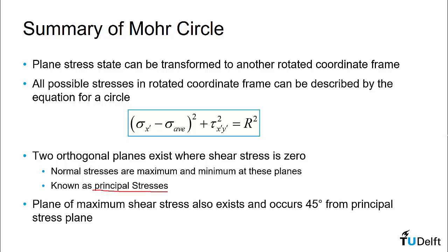We also saw that there was a plane of maximum shear stress that exists, and it occurs 45 degrees from the principal stress plane, and that is the top of the Mohr's circle. And in fact, the value of this maximum shear stress is precisely the radius of the Mohr's circle. We will utilize these maximum shear stresses and maximum principal stresses later on to look at the failure criteria for different materials and structures.